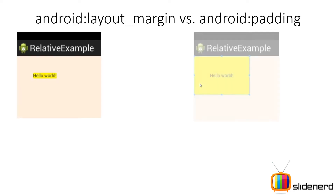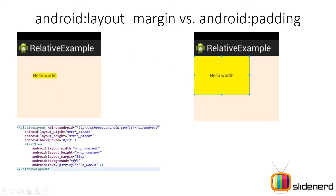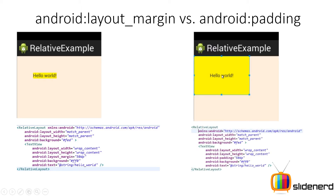Here I have two examples. You guys can see some difference between both of them. The code for the left one has a relative layout with a text view inside it, and a layout margin of 50dp. On the right side, for the same text view and the same relative layout, I have an Android padding of 50dp.